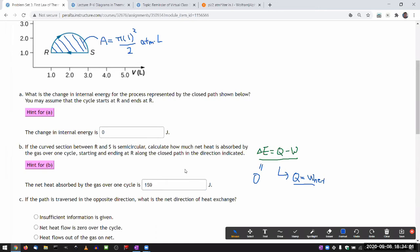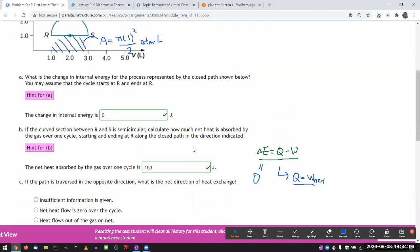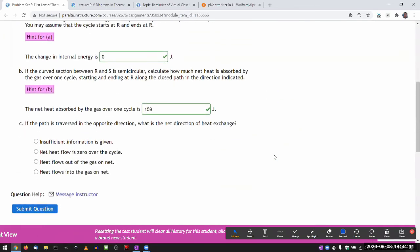So that should be 159 joules. Let me just double check that these two answers are correct. Good. And then move on to part C. Part C, if the path is traversed in the opposite direction, what is the net direction of heat exchange? I guess that's where you kind of have to understand correctly what we mean by area under the curve. And so the answer should be flows out of the gas on net.